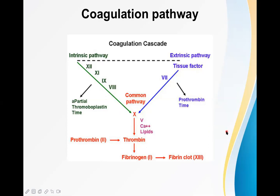Factor 12, 11, 9, and 8 are all involved in the intrinsic pathway. Ultimately, factor 10 is activated and converts prothrombin (factor 2) into thrombin, and thrombin converts fibrinogen into a fibrin clot.